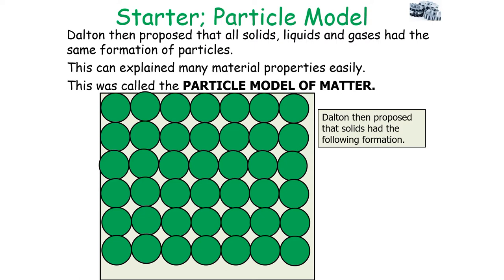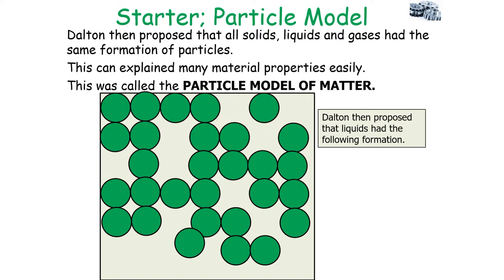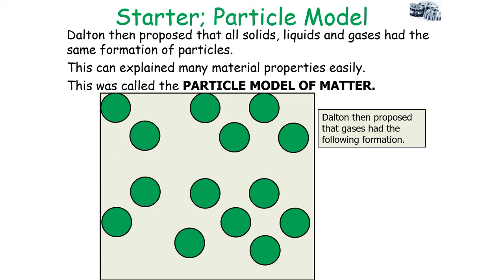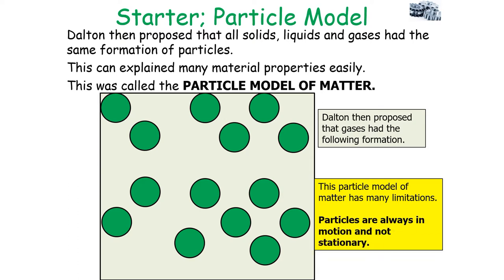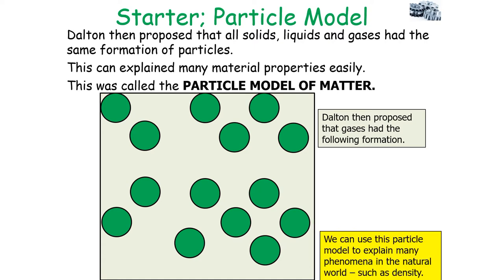Dalton proposed that solids had a particular formation, liquids had their formation, and gases have their formation. Now this particle model of matter has many limitations: it doesn't show the forces of attraction between the particles, the particles aren't actually solid spheres of identical sizes, and the particles are in motion and not always stationary. But we can use the particle model to explain many natural phenomena in the world, such as density.